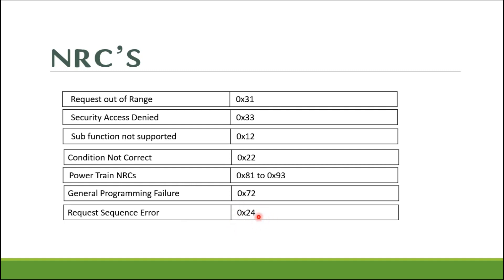NRC 0x24 is Request Sequence Error. The routines must be requested in proper sequence. For example, before starting a routine, if you request stop routine or Request Routine Result, you will get NRC 0x24. You must always start the routine first. Then you can perform either Request Routine Result or stop. Do not request stop routine or Request Routine Result before start routine, or you will get the negative sequence error response.